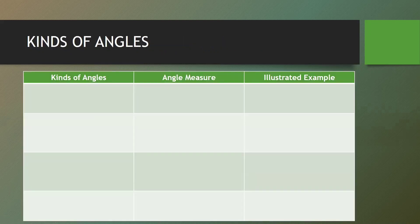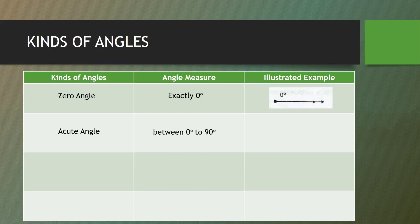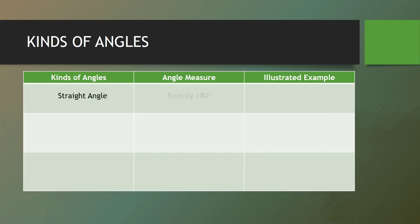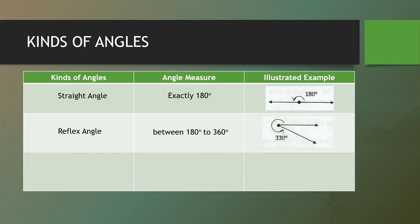Next are the kinds of angles. We have exactly seven kinds of angles. The first is the zero angle, which measures exactly zero degrees. Next, the acute angle, which measures between zero and 90 degrees. Next, the right angle, which measures exactly 90 degrees. Next, the obtuse angle, which measures between 90 and 180 degrees. Next, the straight angle, which measures exactly 180 degrees. Next, the reflex angle, which measures between 180 and 360 degrees. And lastly, the angle of complete revolution, which measures exactly 360 degrees.